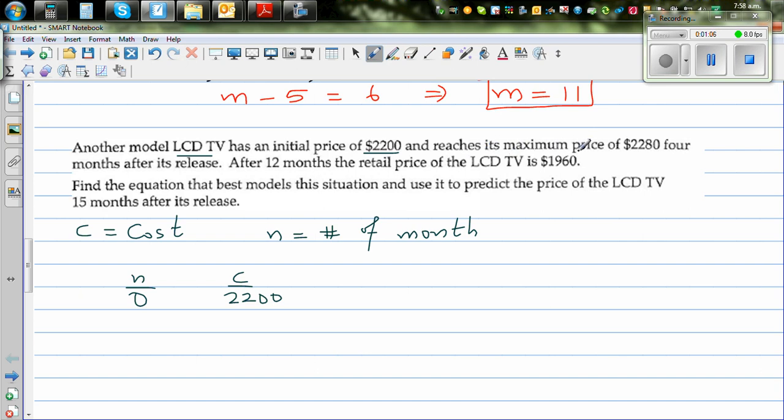It reaches its maximum of $2,280 four months after its release. So when N is 4, you reach the maximum of $2,280. This is your maximum. Now any electronic good starts with a price, then it reaches its maximum, then it drops down. After 12 months, the retail price of the LCD is $1,960. Can you see it has dropped down?